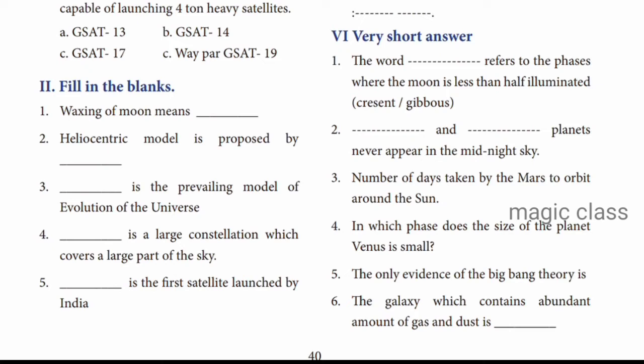Question number 2: Heliocentric model is proposed by dash. Helio means sun, centric means center - so it is the model where the sun is placed at the center. Who proposed this model? The answer is Nicholas Copernicus.